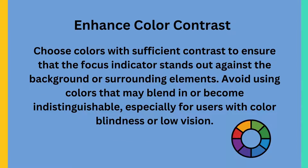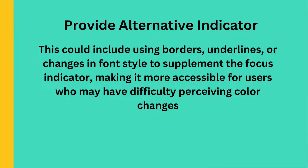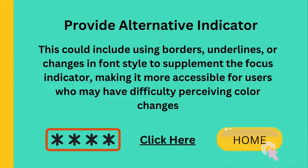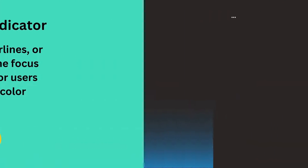One should enhance color contrast — choose colors with sufficient contrast to ensure that the focus indicator stands out against the background or surrounding elements. Avoid using colors that may blend in or become indistinguishable, especially for users with color blindness or low vision. One should also provide an alternative indicator, which could include using borders, underlines or changes in font styles to supplement the focus indicator, making it more accessible for users who may have difficulty perceiving color changes.